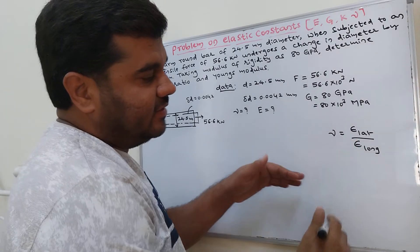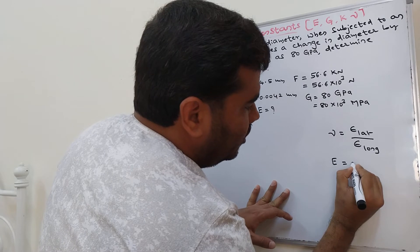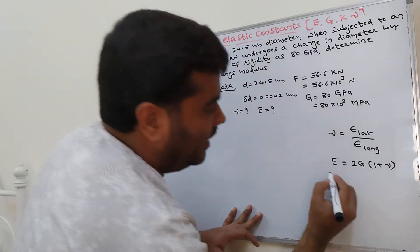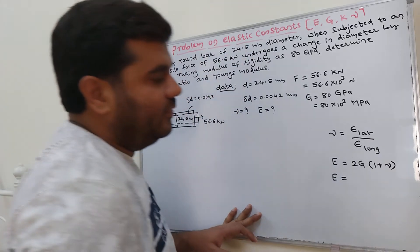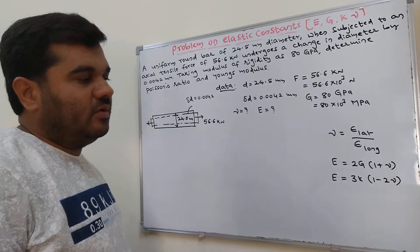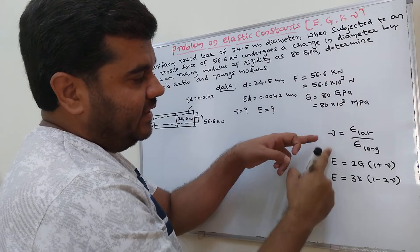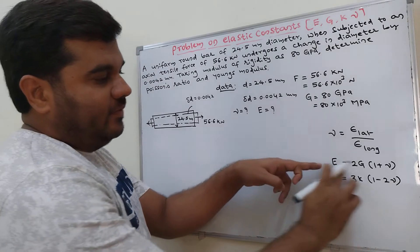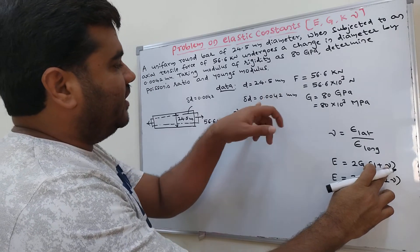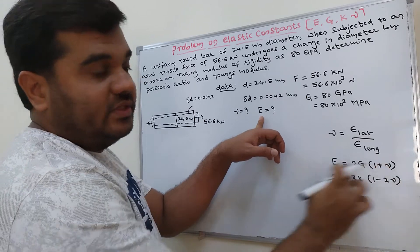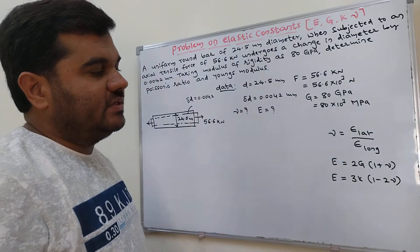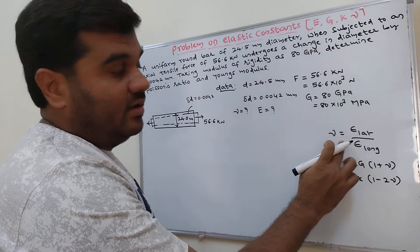The elastic constant formulas we can use are: E equals 2G into (1 plus nu), and E equals 3K into (1 minus 2nu). However, in both these equations nu is unknown and E is also unknown, and K is unknown. So we cannot use these directly. It is better to start with the general formula.